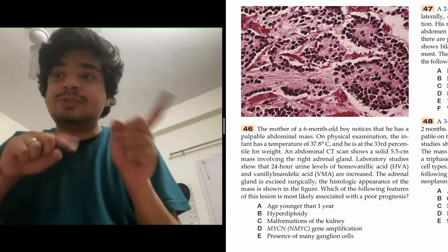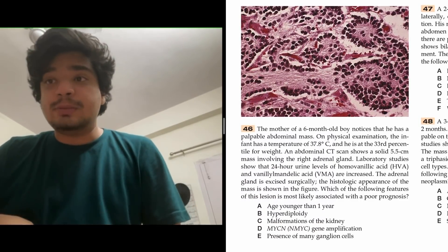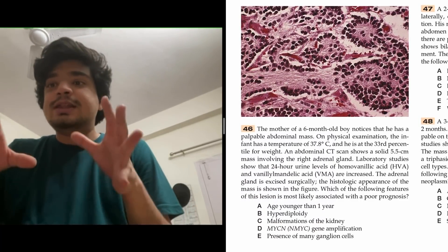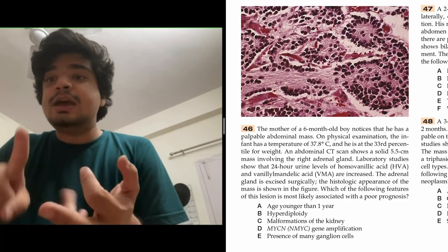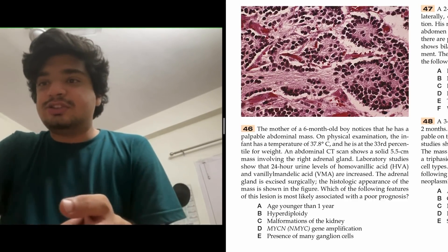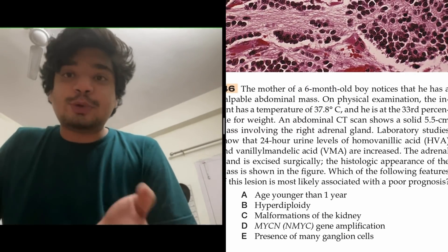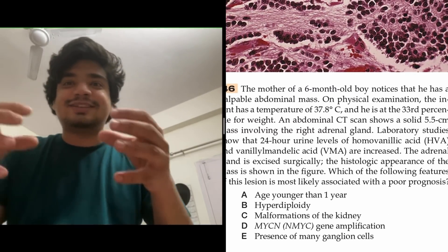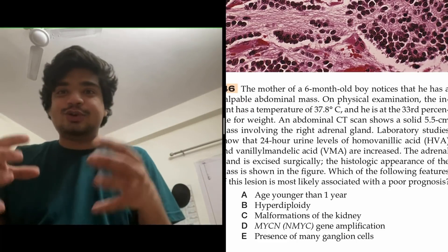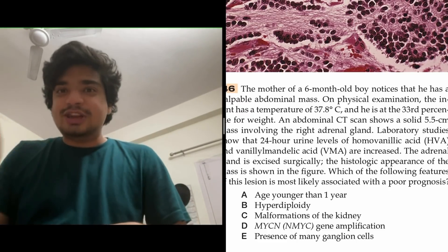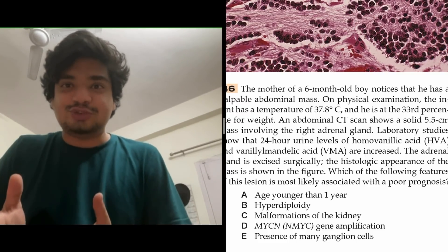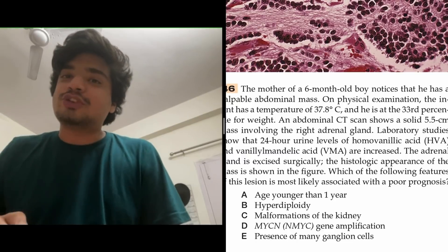Similarly, a mother of a six-month-old boy noticed he has a palpable abdominal mass. This is the image given. He has increased VMA and HMA. Adrenal gland is excised surgically. Histological appearance is shown. Which of the following is related to poor prognosis? This is an example - they are asking neuroblastoma in a clinical scenario. Abdominal mass, six months old, HMA and VMA raised - this is neuroblastoma, typical presentation.